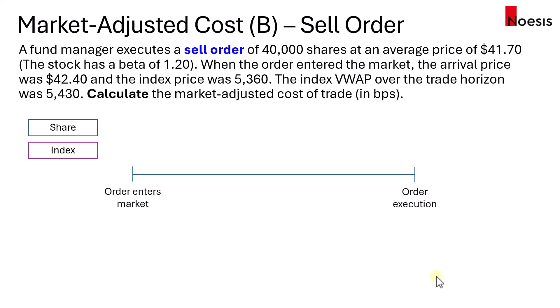Next, let's look at the sell order. A fund manager executes a sell order of 40,000 shares at an average price of $41.70, and the stock has a beta of 1.2. When the order entered the market, the arrival price was $42.40 and the index price was $5,360. Over the trade horizon, the index VWAP is $5,430. We'll also calculate the market adjusted cost of trade for this sell order.